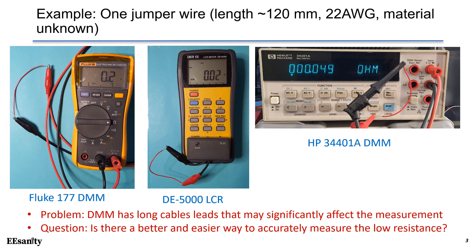However, the measurement has a large variance. We don't know exactly the resistance. Actually, the problem is that the jumper wire has comparable resistance as the test leads. This makes the measurement inaccurate. The question is, is there a better way to accurately measure the low resistance?